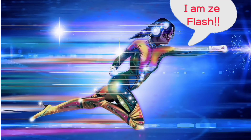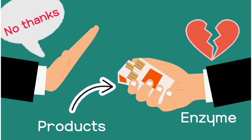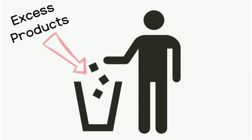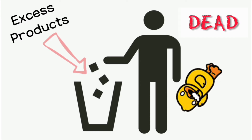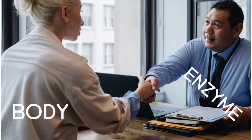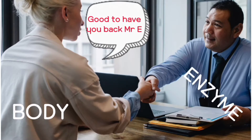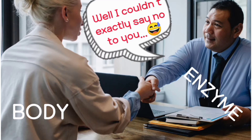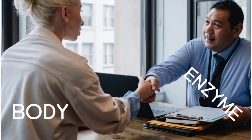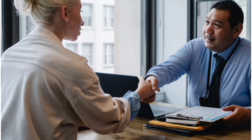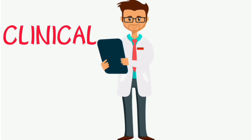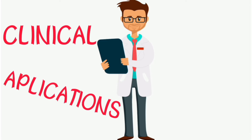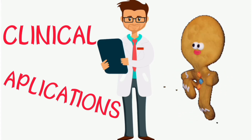We know they're fast, and the point is that at some point the body no longer needs these products. If it can't stop them, it leads to a waste of energy and resources, and sometimes it can be fatal. Vice versa, the body also needs to be able to activate enzymes that are inactive when it needs to make the products. All of these fall under enzyme regulation, and we're also going to look at some practical applications in medicine.